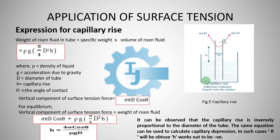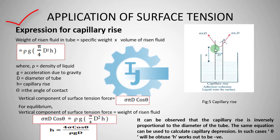Let's derive an expression for capillary rise. We assume capillary rise of water — in the container there is water, and we partially immerse a glass tube of diameter D. We can see a rise of height h of the liquid. The weight of the rising fluid in the tube equals specific weight multiplied by the volume of the rising fluid. Specific weight equals rho times g, and the volume of rising fluid is (π/4) × d² × h. Here, rho is the density of liquid, g is acceleration due to gravity, d is the diameter of the tube, h is capillary rise, and theta is the angle of contact.